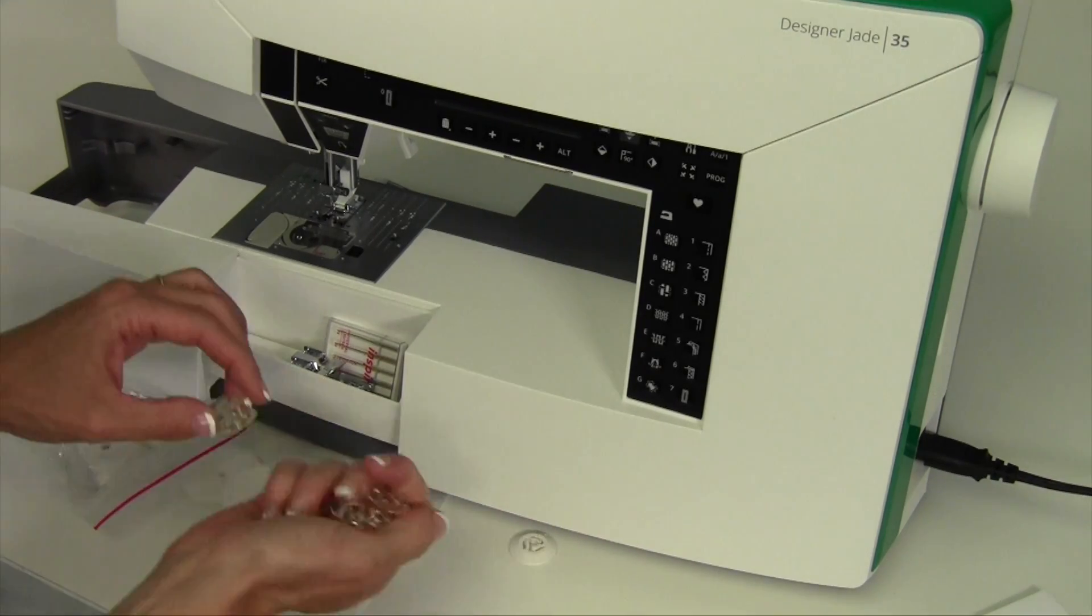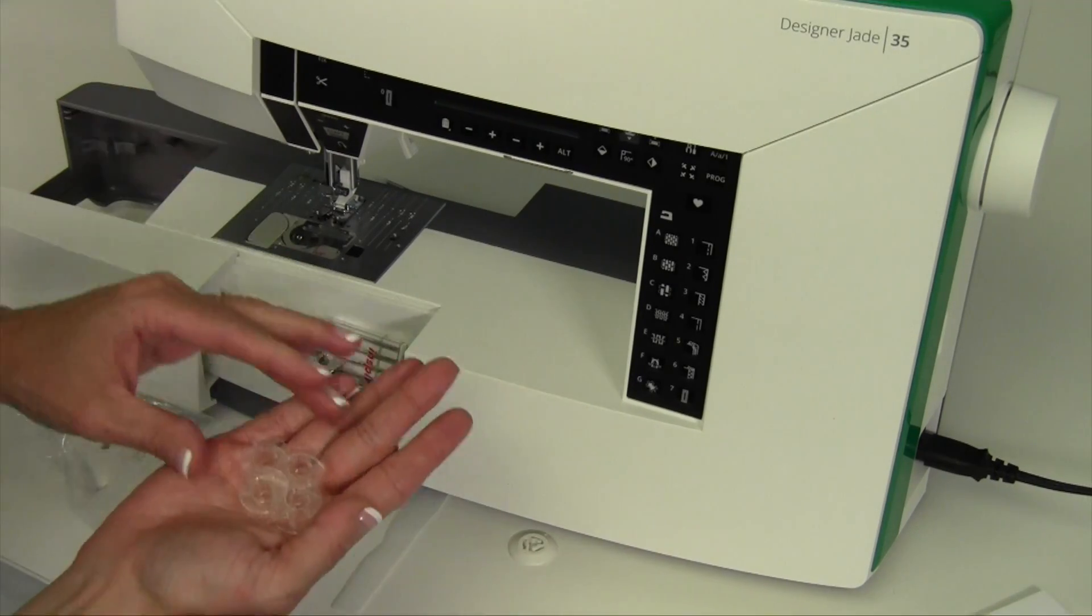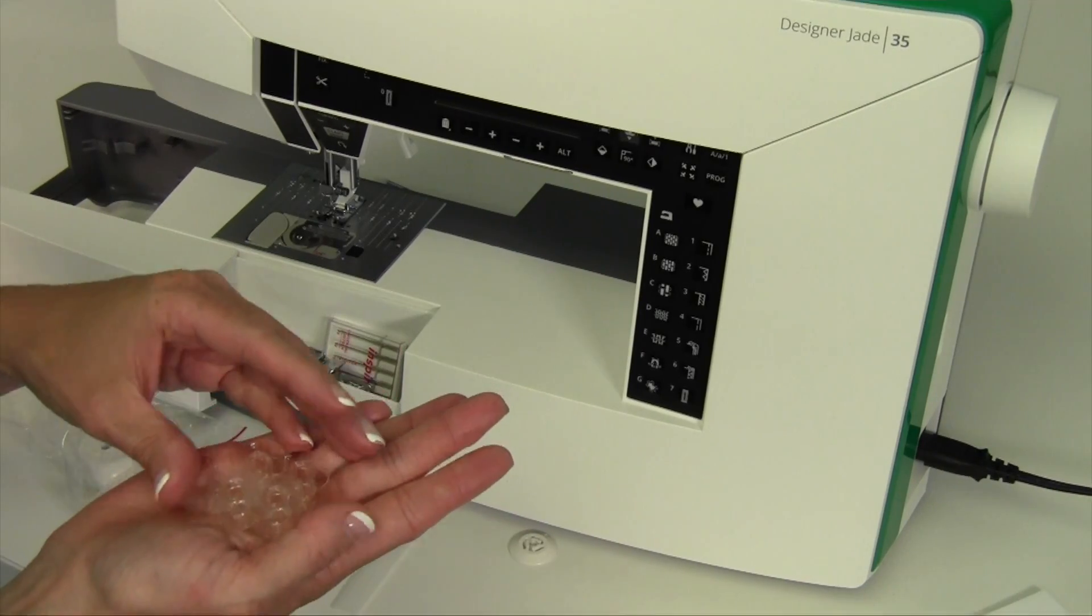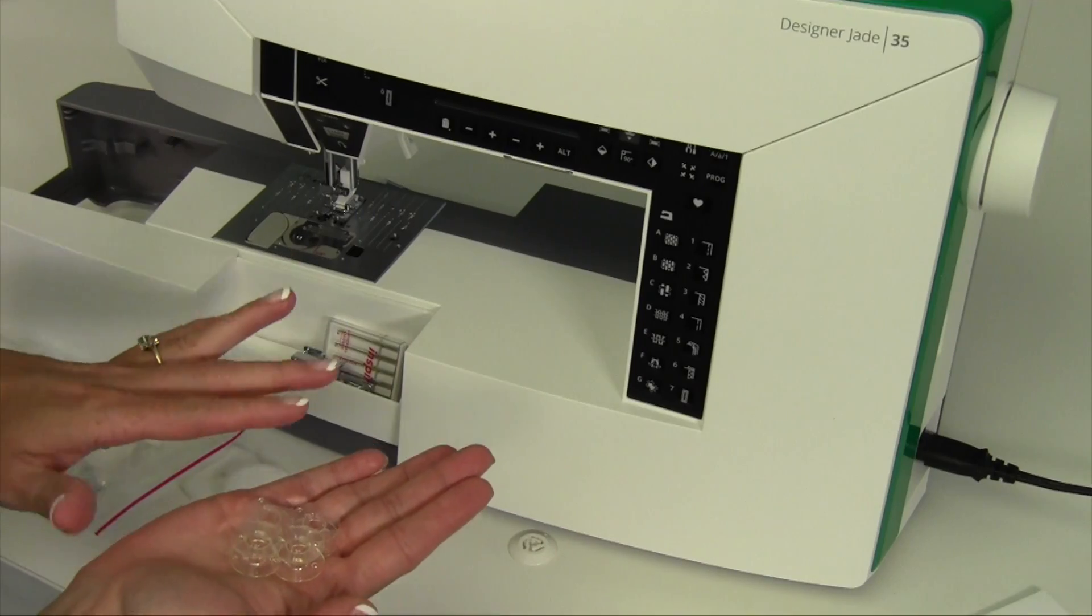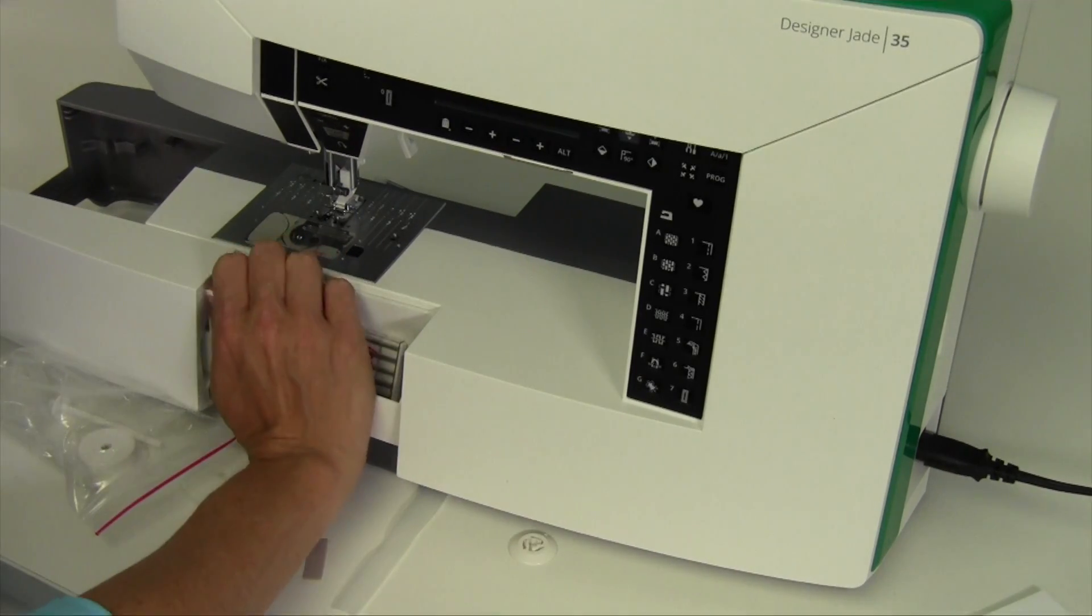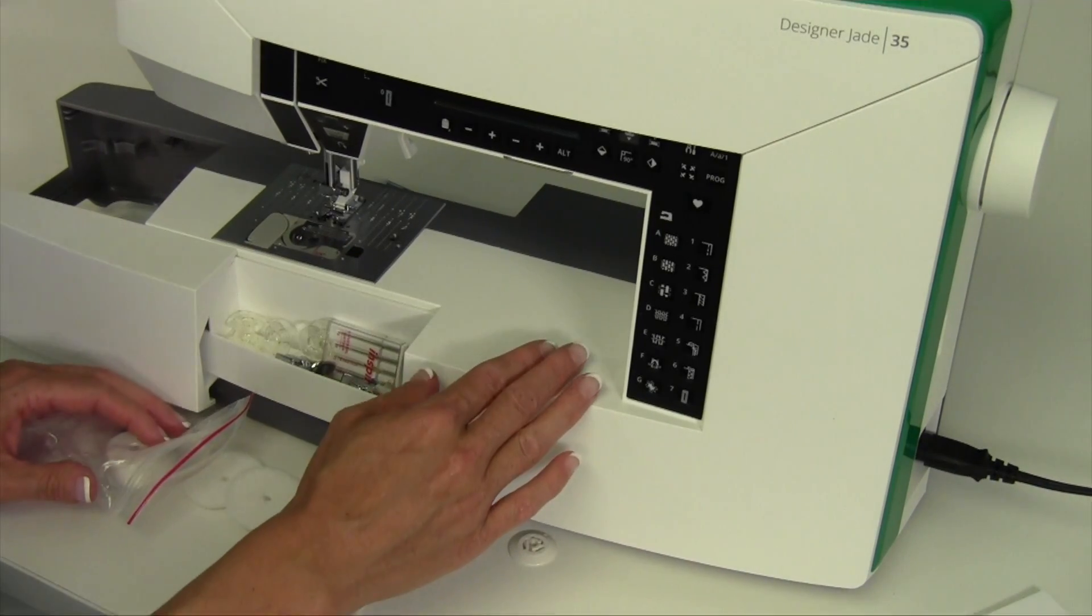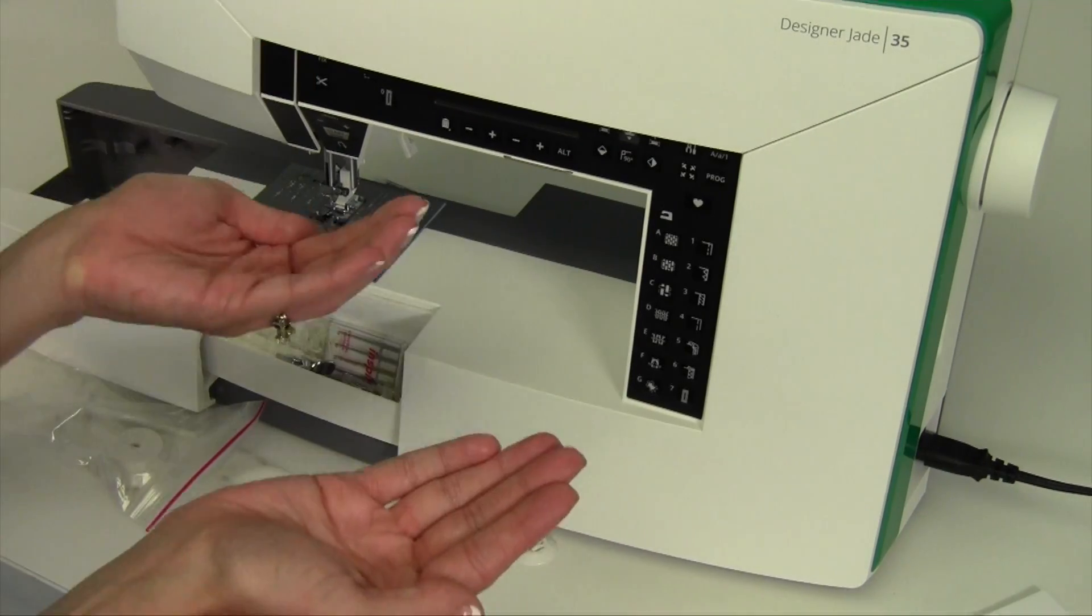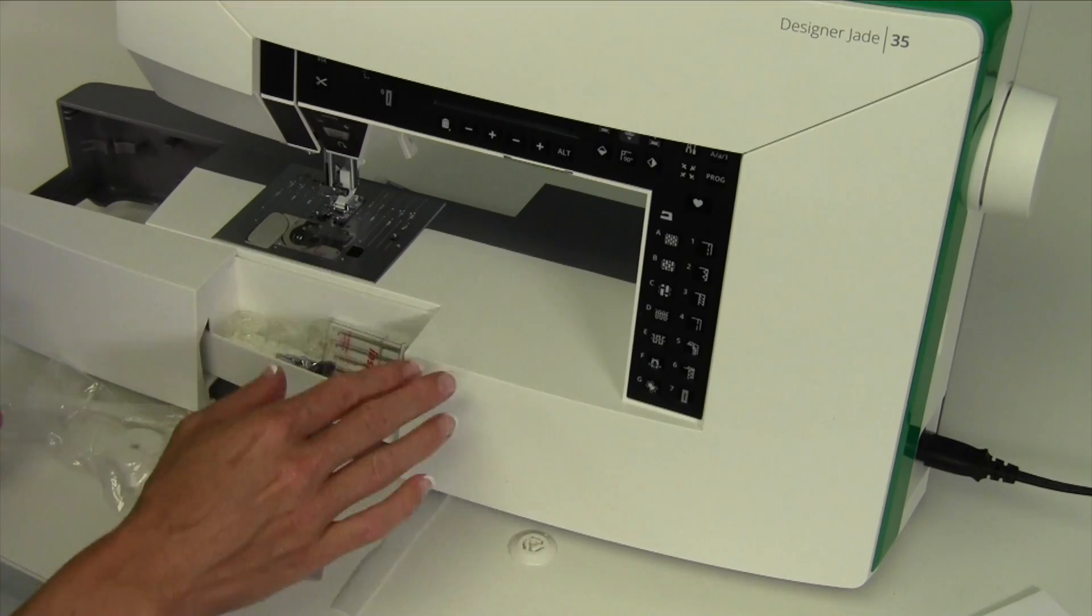You will have a total of five bobbins. There's one inside the machine that's empty when you open it up and then four separate ones. These bobbins are specific for this machine so don't be using any bobbins from previous machines that aren't this exact size. If you do have a machine that looks like the bobbins are similar, just double check with your Husqvarna Viking store to make sure that they are exactly the same because you don't want to have the wrong size of bobbin in this machine.